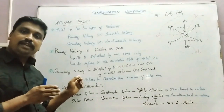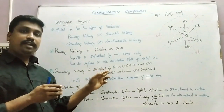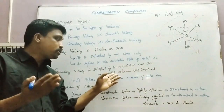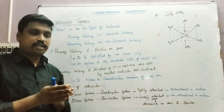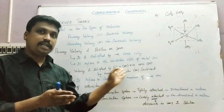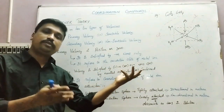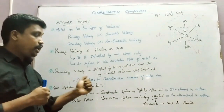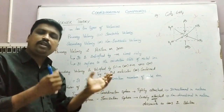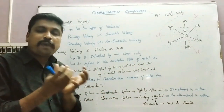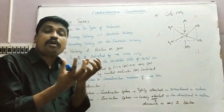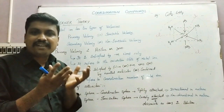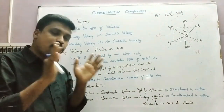Secondary valency is satisfied by negative ions, positive ions, or neutral molecules — any two or three may combine to satisfy the secondary valency. It refers to the coordination number, which means how many pairs of electrons a metal atom or ion can accept.